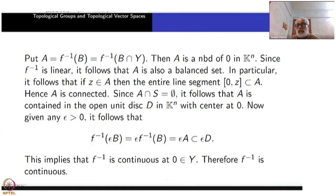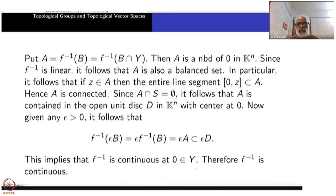Since 0 is an element of Y and Y is a topological vector space, continuity at 0 is enough to show that f-inverse is continuous everywhere. So we see how connectivity was finally used to show that the inverse is continuous.